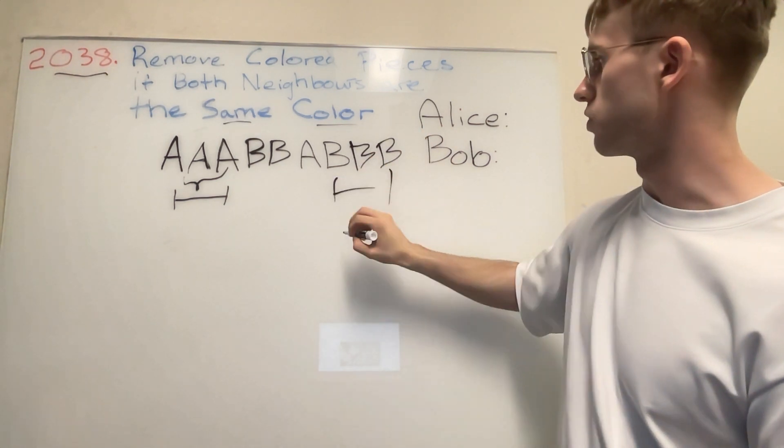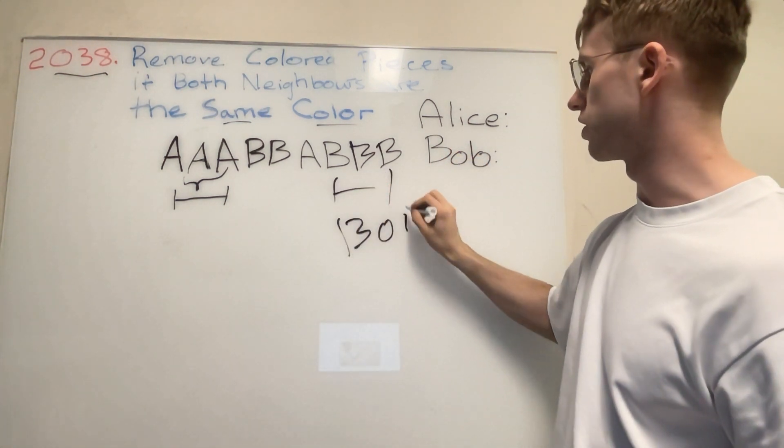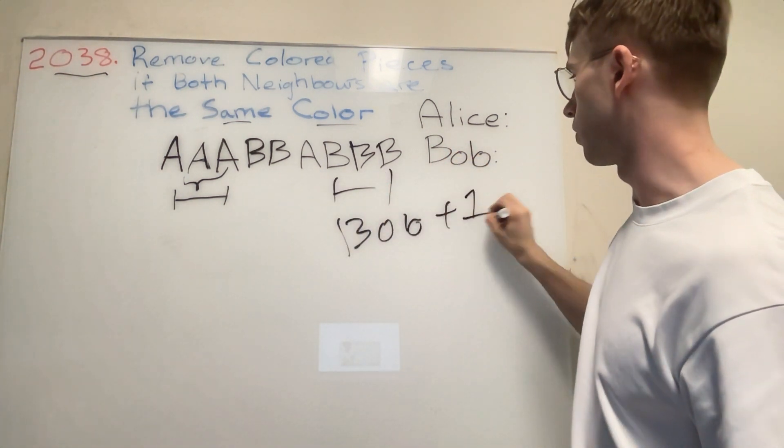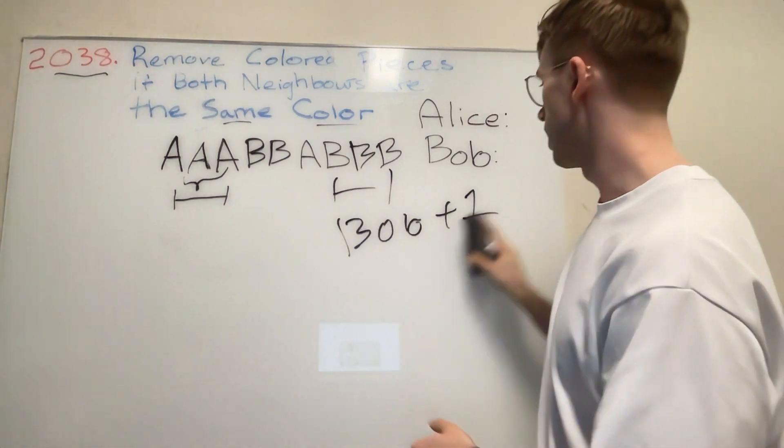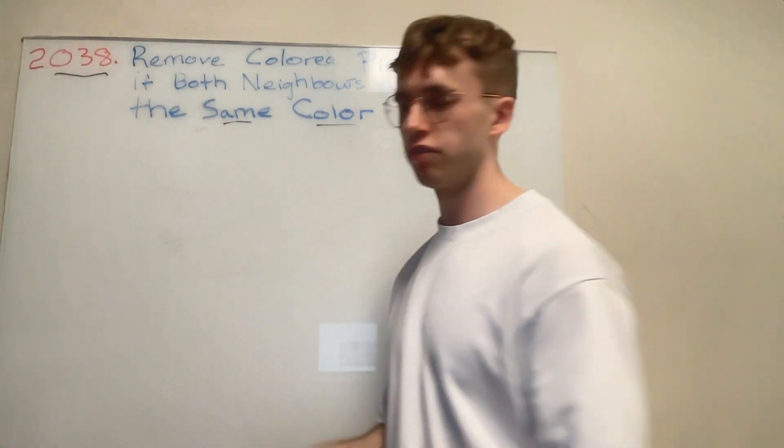But when it encounters three B's in a row, let's say there's two extra B's here, when it encounters this and the sliding window reaches the end here, then Bob would get one extra point.